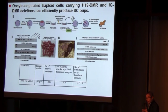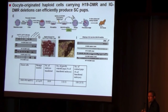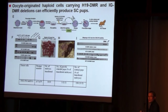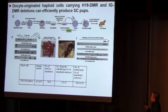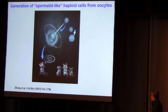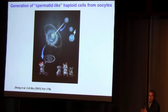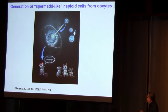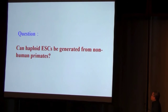So we proposed that if we remove H19 DMR and IG-DMR in our haploid cells derived from oocytes, these cells may also support semi-cloned mice generation by injection into oocytes — just like haploid cells from sperm. We did this experiment using CRISPR-Cas9 to remove H19 DMR and IG-DMR in our oocyte-derived haploid cells. By injection of these DKO haploid cells into oocytes, we found 15.5% of transferred embryos could develop to term. This study actually shows that in the mouse kingdom, sperm is not necessary for reproduction — we can produce a female mouse kingdom by our semi-cloned technology.